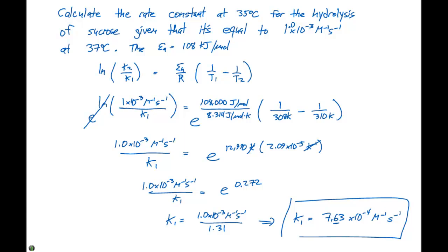Let's check if this answer makes sense. This equation can get confusing — we might flip K1 and K2 — but think about it: if the rate constant is 1.0 times 10 to the minus three at 37 degrees Celsius, when we go to a cooler temperature we expect K to decrease. And indeed it did, going from 1.0 times 10 to the minus three to the smaller value 7.6 times 10 to the minus four. So this answer makes sense.